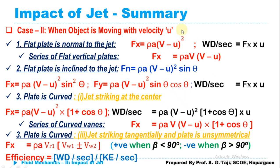When the plate is unsymmetrical and moving with velocity u, we determined the equation: Fx = ρA·Vr1·(Vw1 ± Vw2), where Vw1 is the velocity of whirl at inlet and Vw2 is velocity of whirl at outlet. Take the positive sign when β < 90°, negative when β > 90°, and when β = 90°, set Vw2 = 0. After that, determine efficiency by computing work done per second.